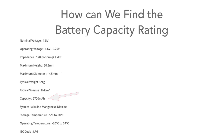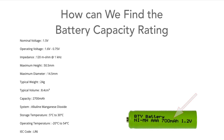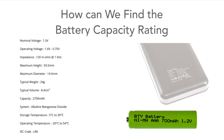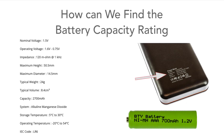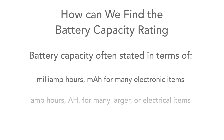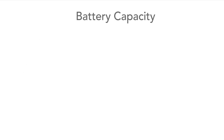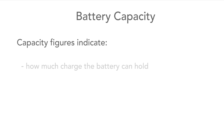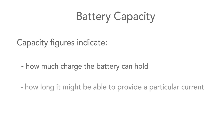When we look at the data sheets, or sometimes on the product itself, we can often find a rating for the battery capacity, which is usually stated in terms of milliamp hours, or if the battery is very much larger, in terms of amp hours. This figure gives an indication of how much charge the battery holds and how long it can provide a certain current.